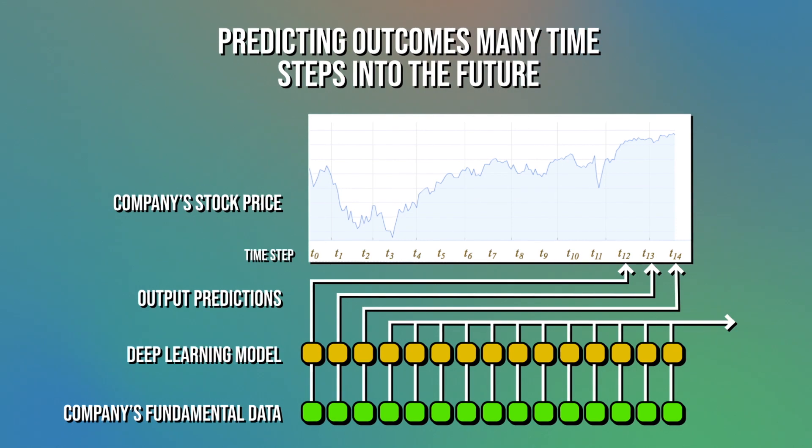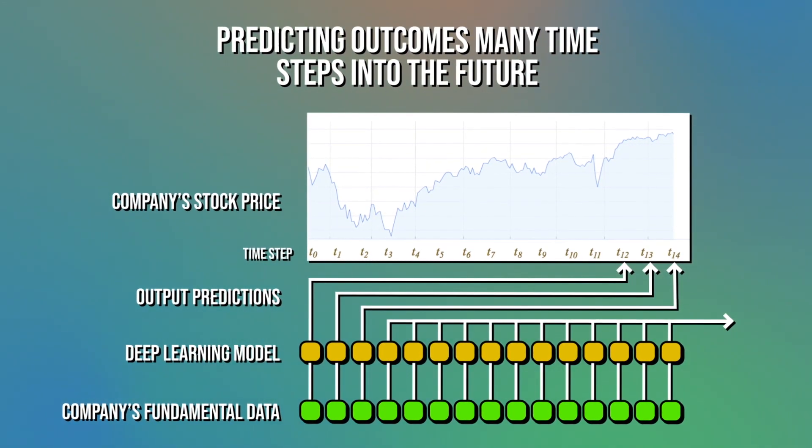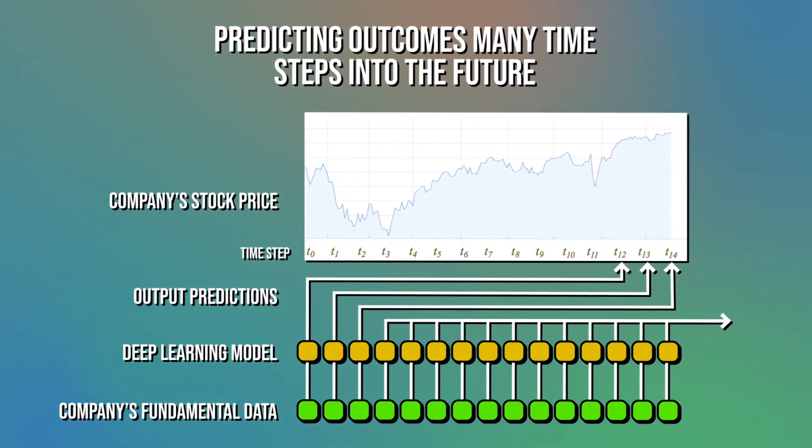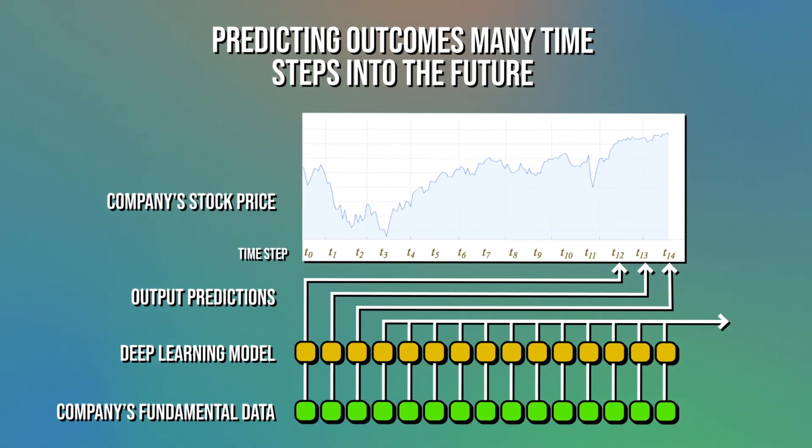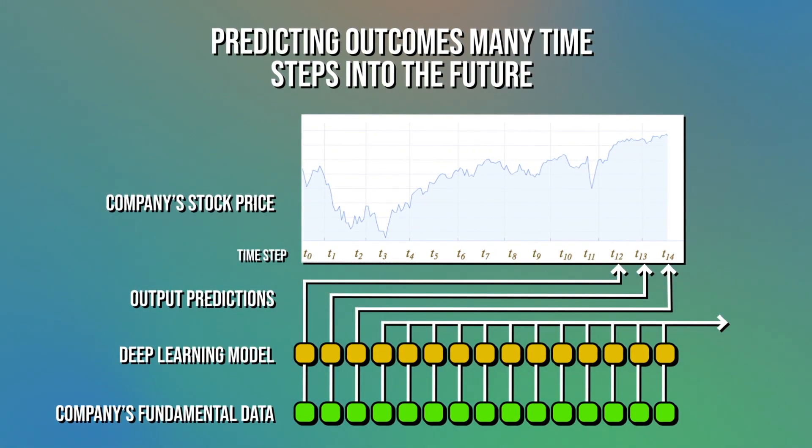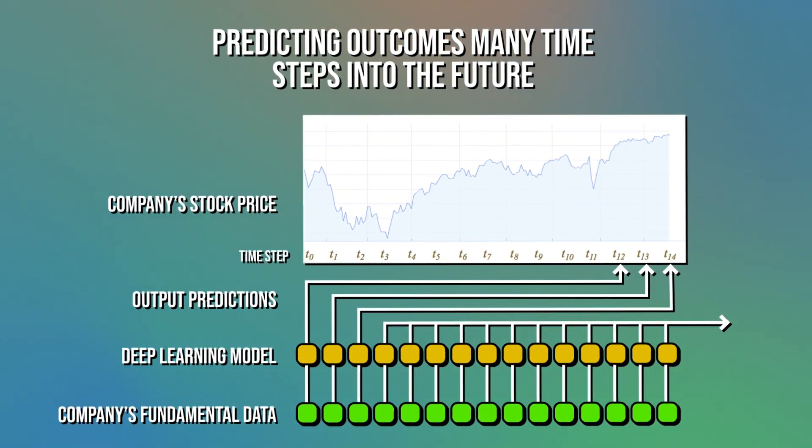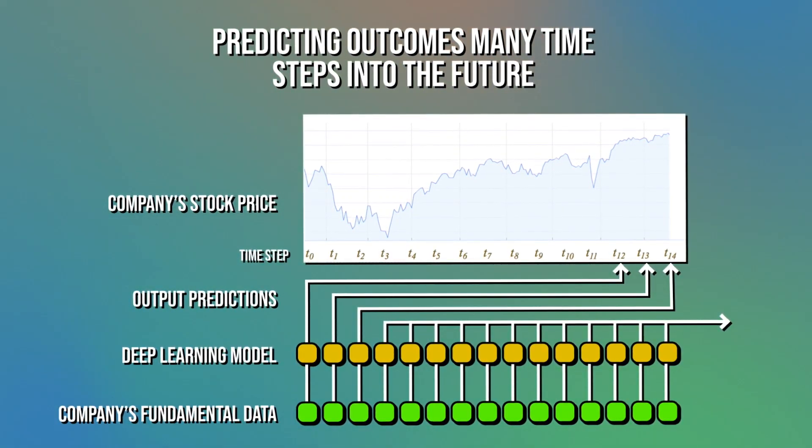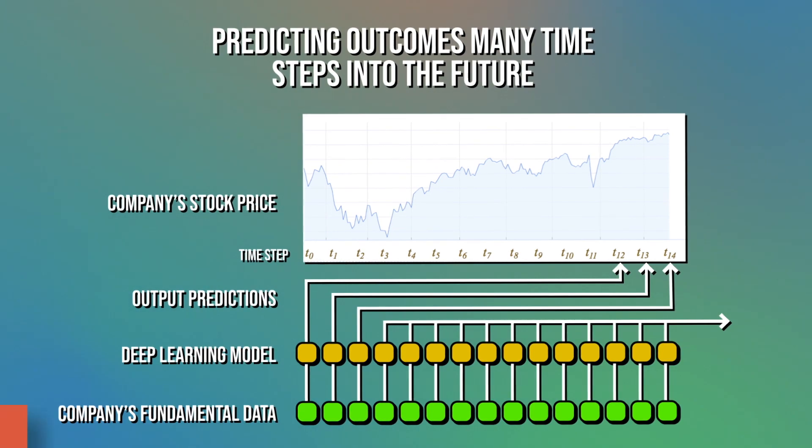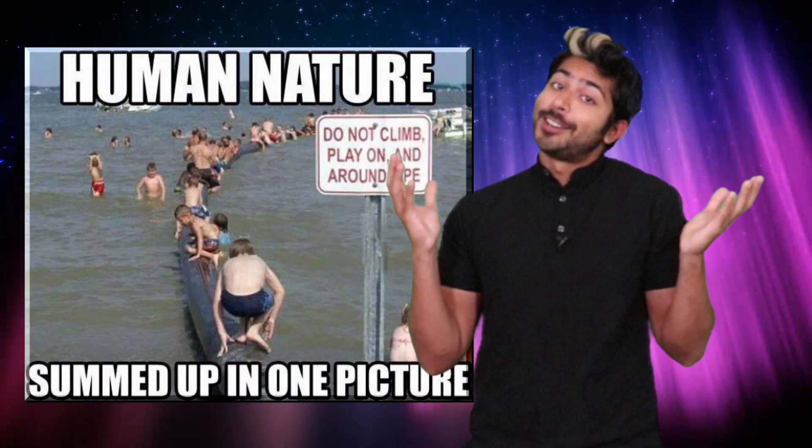We need more than just a price prediction model. We also need a rule-based policy. This policy will take as input our price prediction, then output a decision as to what to do with it, as in place an order, do nothing, dance, etc. How are we supposed to come up with a policy? And how do we optimize the policy parameters and decision thresholds? Heuristics and human intuition can only get us so far.